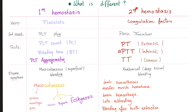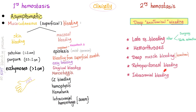The problem with hemophilia manifests as deep or anatomical bleeding: expect joint bleeding, muscle bleeding, brain bleeding, retroperitoneal bleeding, late re-bleeding, and bleeding after surgery or tooth extraction — because the platelet plug alone is not enough. These are the clinical symptoms of hemophilia.